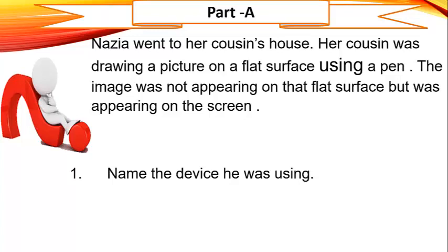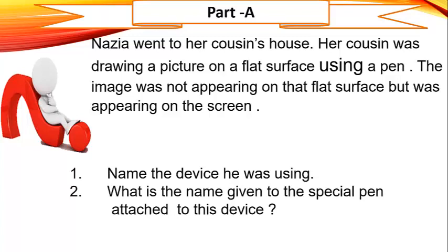I have a clue for it. This device consists of a flat surface where we can draw with the help of a special pen. Remember, we have learned about this device in week 5, lecture 2. The second part of this question is: what is the name given to the special pen attached to this device? It is shaped just like a pen, but it's not a pen.